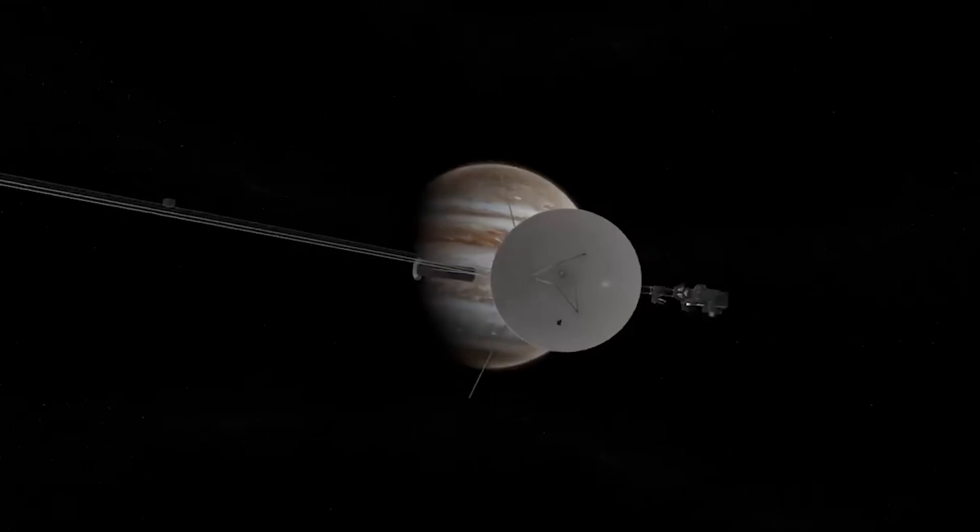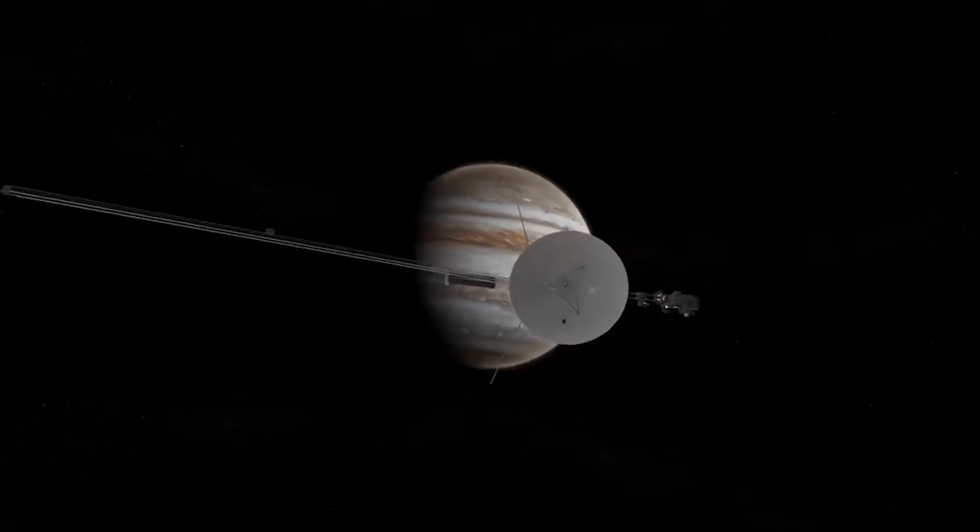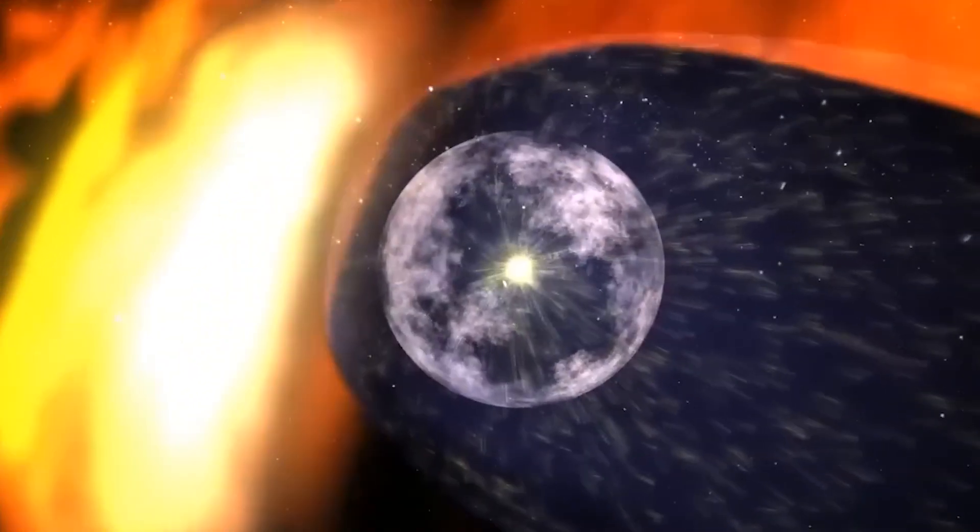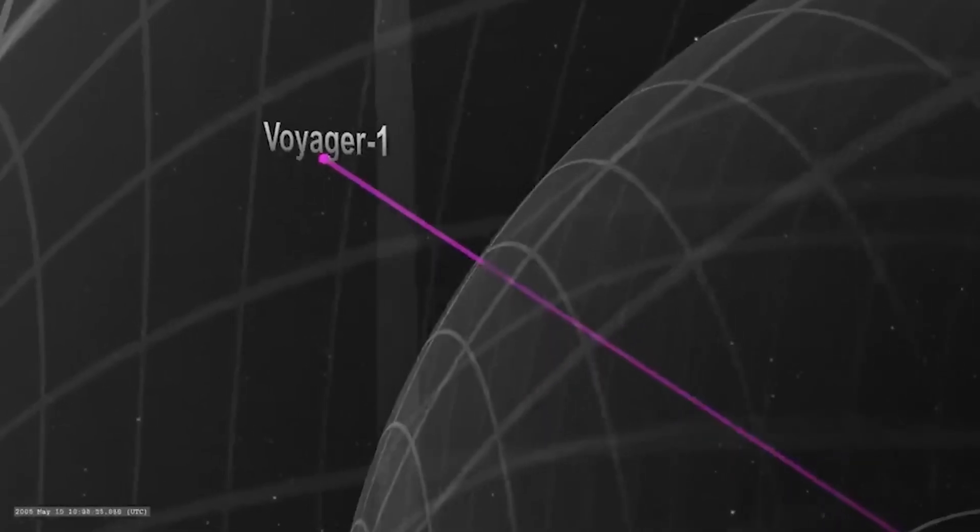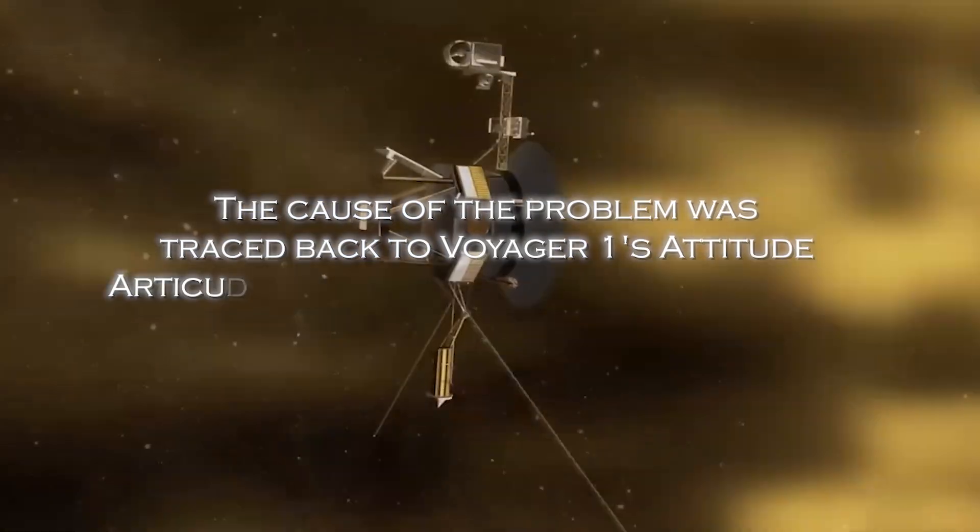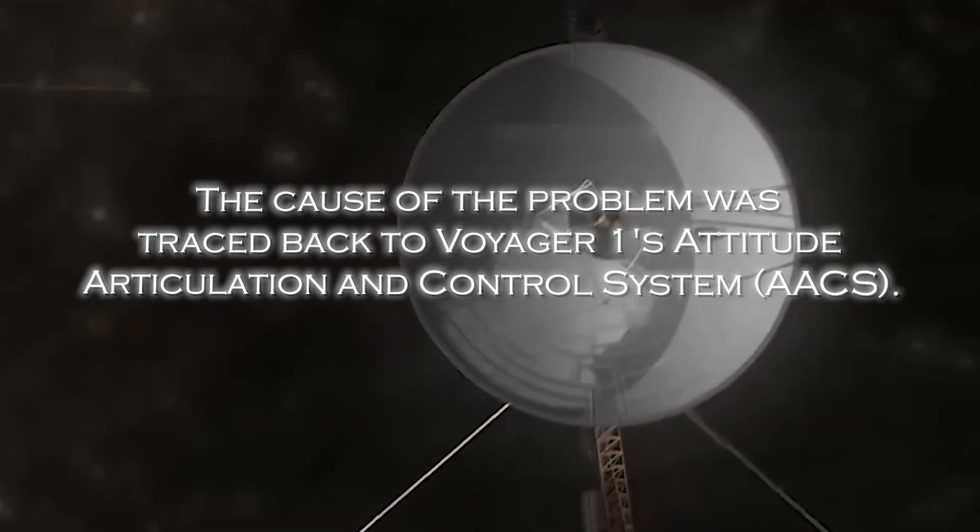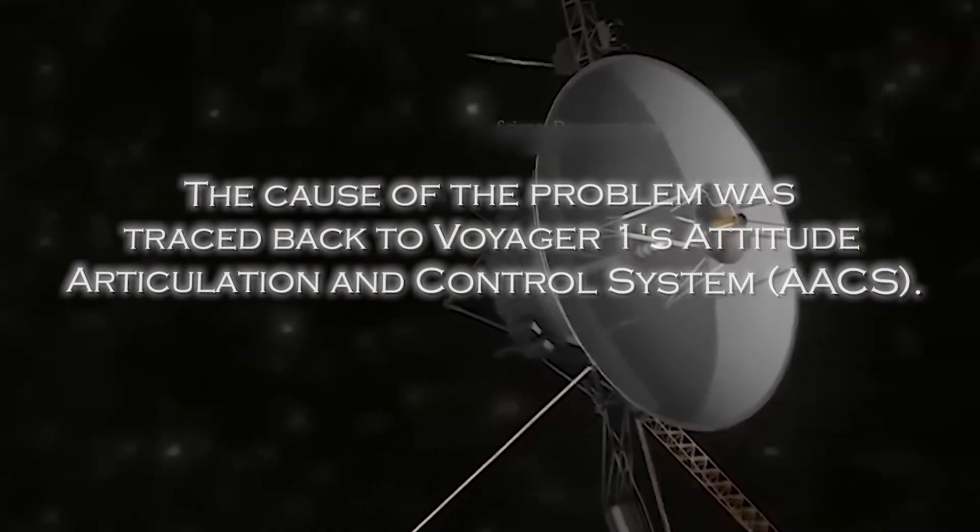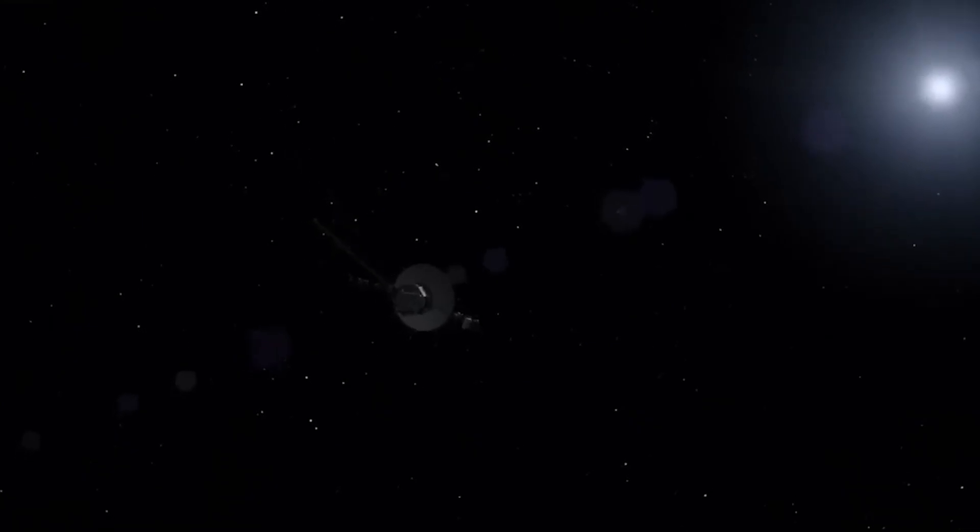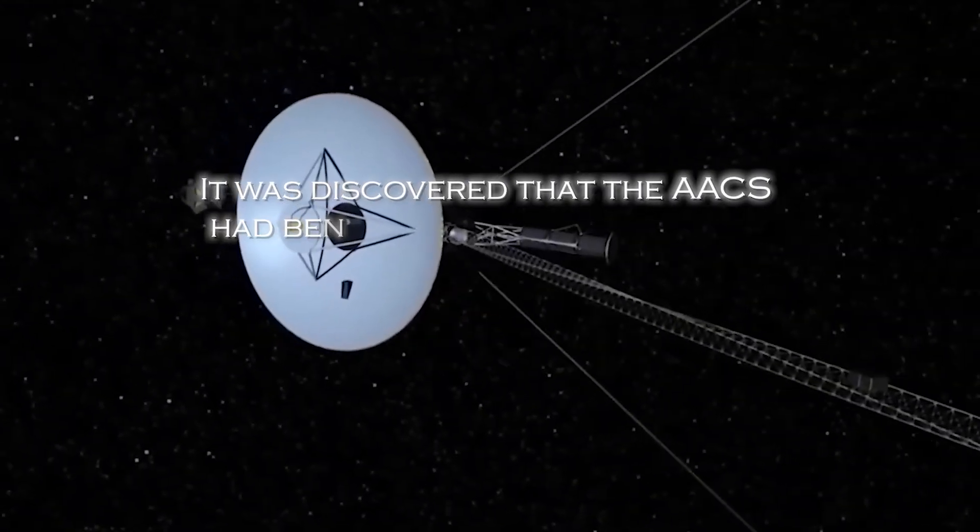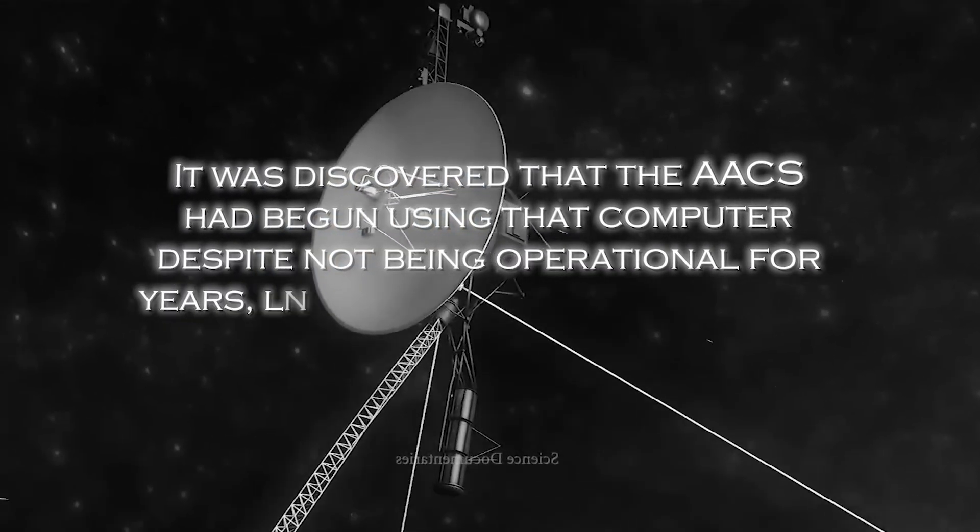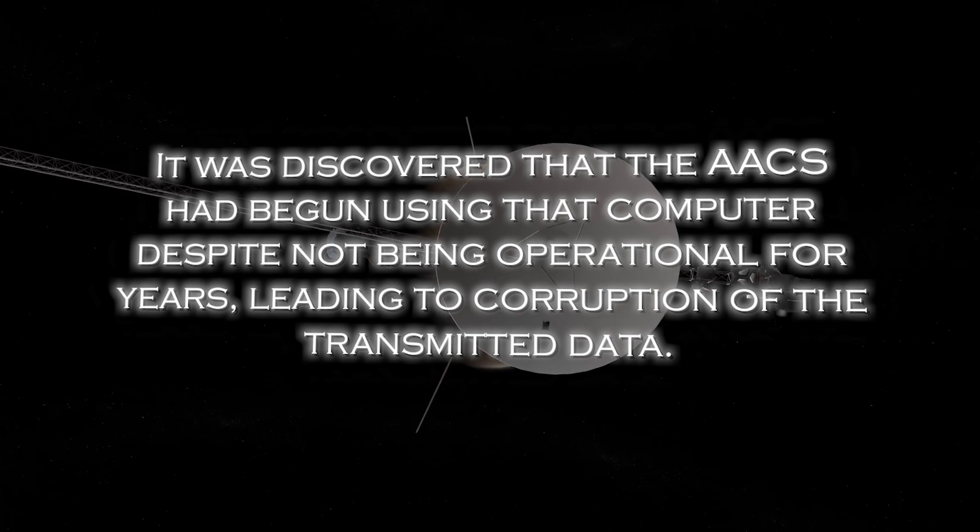After months of receiving encrypted data from the spacecraft, scientists and engineers were finally able to restore clarity and reliability to the information coming from the far reaches of interstellar space. The cause of the problem was traced back to Voyager 1's Attitude Articulation and Control System, or AACS, especially an onboard computer that was supposed to be inactive. Surprisingly, it was discovered that the AACS had begun using the computer despite not being operational for years, leading to corruption of the transmitted data.